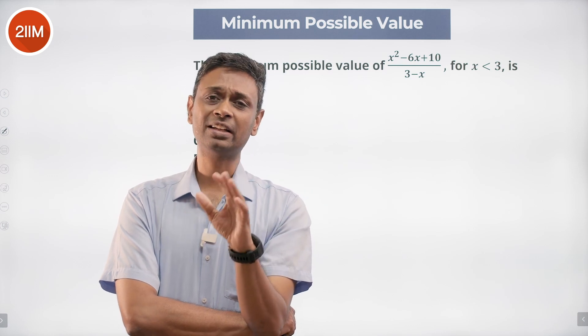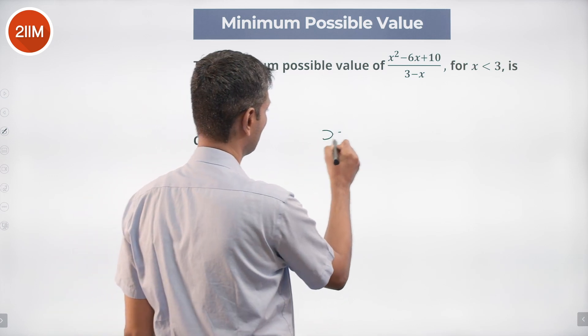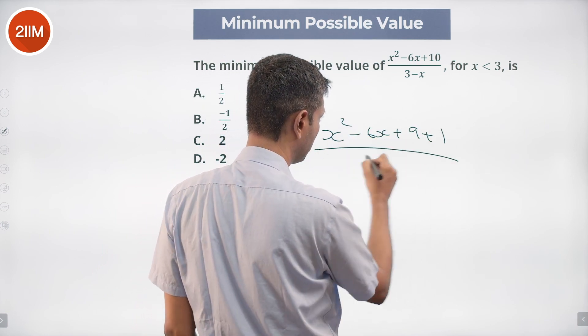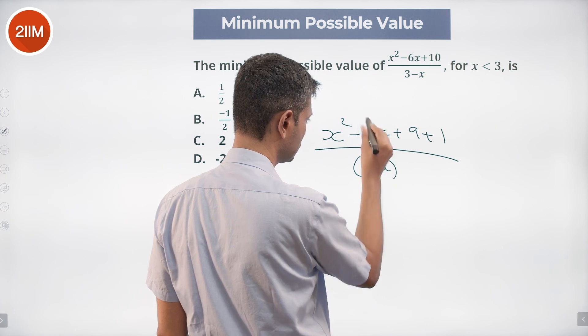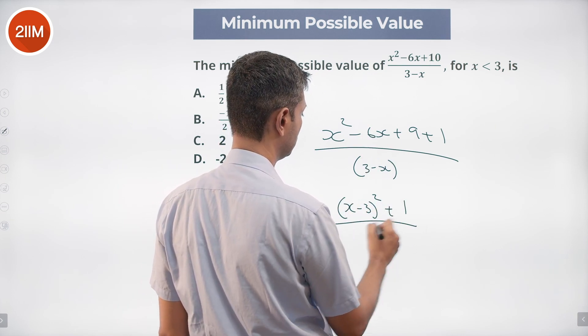Immediately after that is the idea of completion of squares. I'm going to write that numerator as x² - 6x + 9 + 1 divided by 3 - x. This is (x - 3)² + 1 divided by